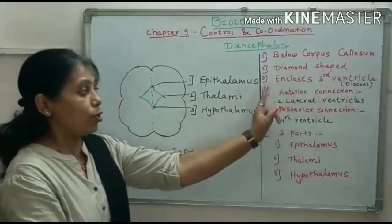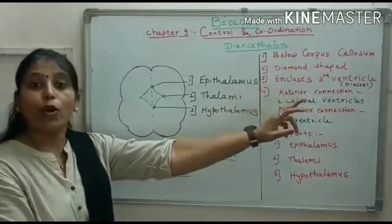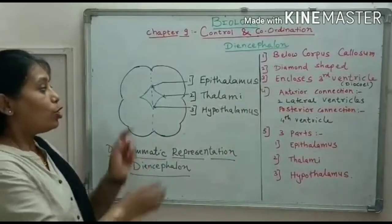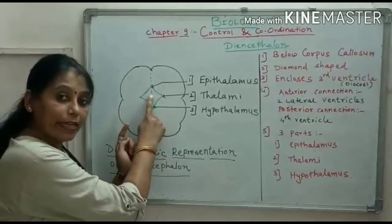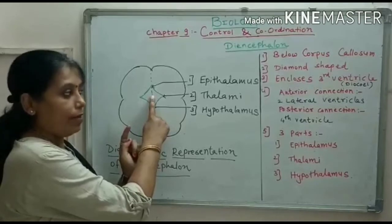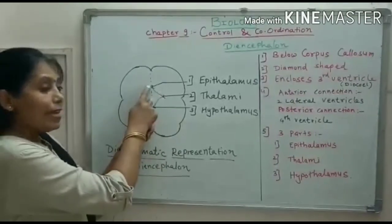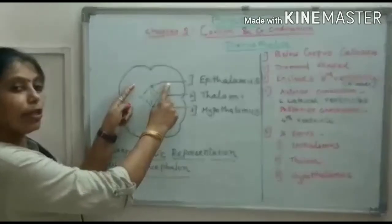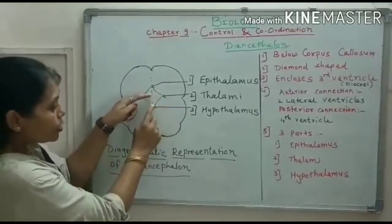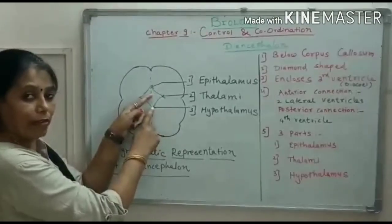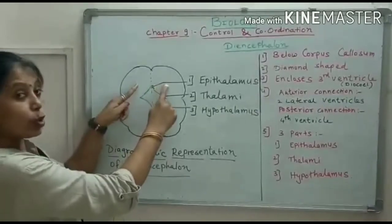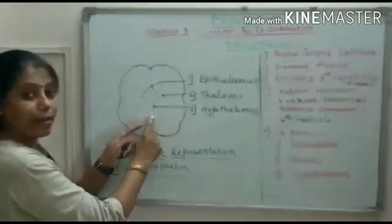The Diencephalon encloses the third ventricle, which is also called the diocele. We have already studied that ventricles are the big cavities. Anteriorly, this third ventricle is connected with the two lateral ventricles present in the cerebral hemispheres, and posteriorly it connects with the fourth ventricle, which is present just below the Diencephalon.